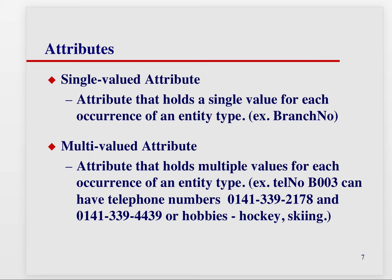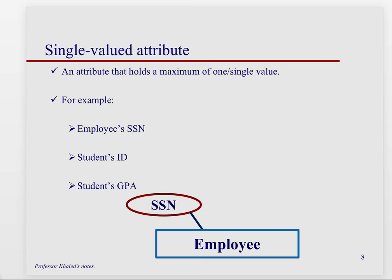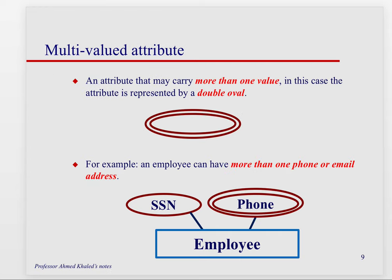Now let's talk about single-valued versus multi-valued attributes. Usually an attribute has only one value — for example, someone's branch number. But sometimes you can have a multi-valued attribute that has more than one value. For example, a person can have multiple phone numbers or multiple hobbies. Single-valued attributes include social security number, ID, and GPA — you can only have one of each.